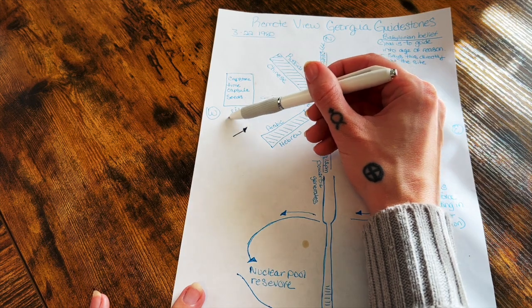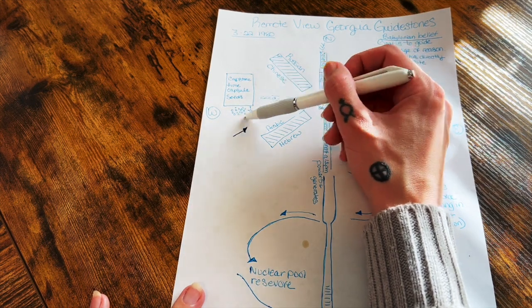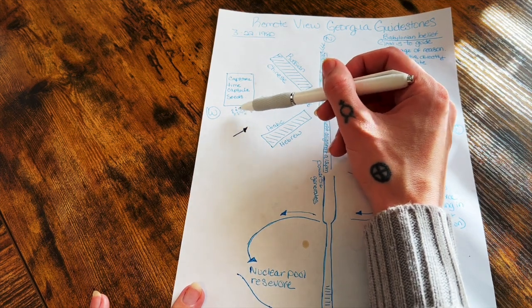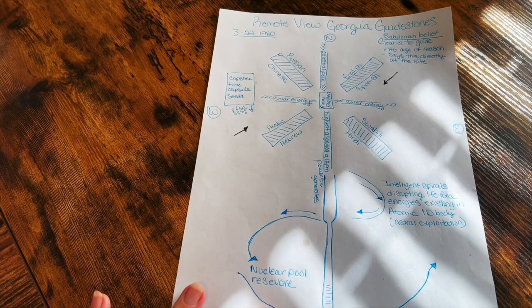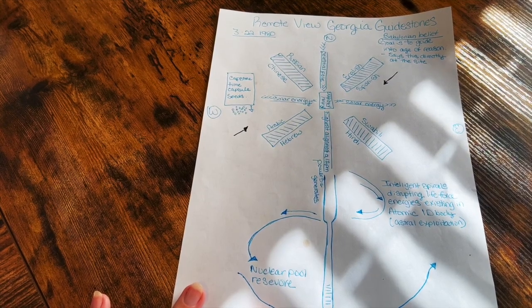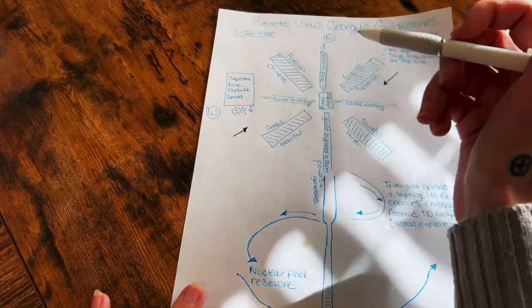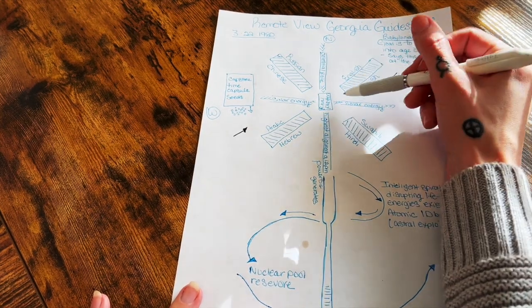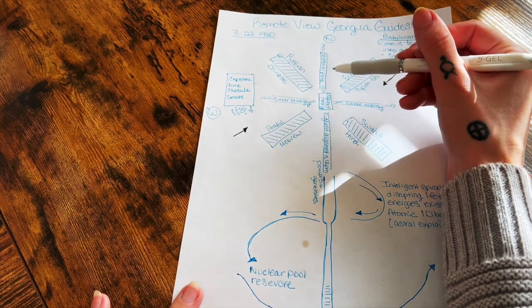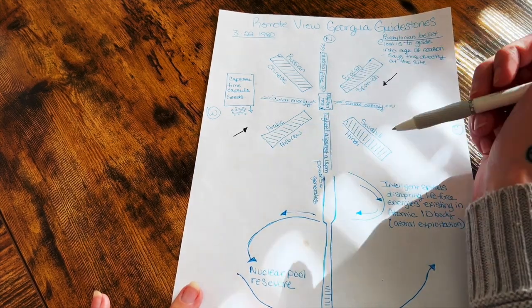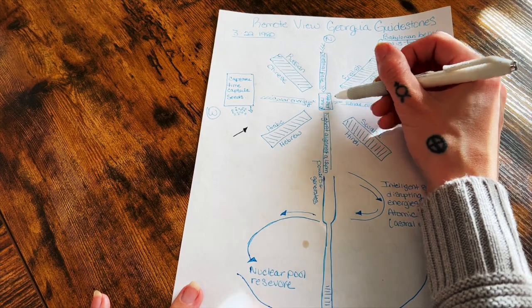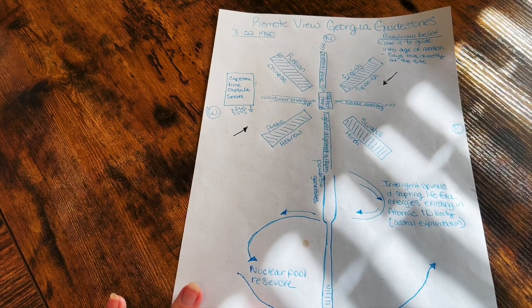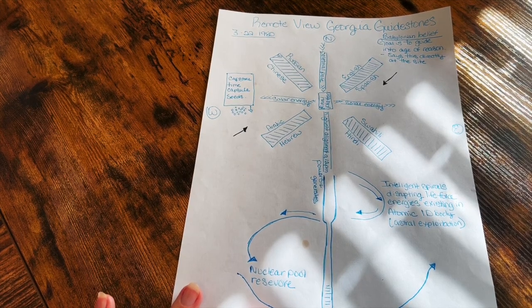I do believe that those seeds are underneath this capstone here, that they put the time capsule with the seeds underneath here. This here is the actual capstone. I call this a ritual platter. This actually is a large stone that goes down that has a slit in the middle as well, but on the top there's this large capstone.